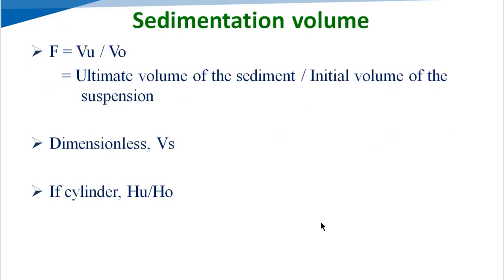For sedimentation volume, F equals VU divided by VO, where VU is the ultimate volume of the sediment and VO is the initial volume of the suspension. F is dimensionless and also denominated as VS. If using a cylinder, we can write F equals HU divided by HO, where HU is the ultimate height of the sediment and HO is the initial height of the suspension.